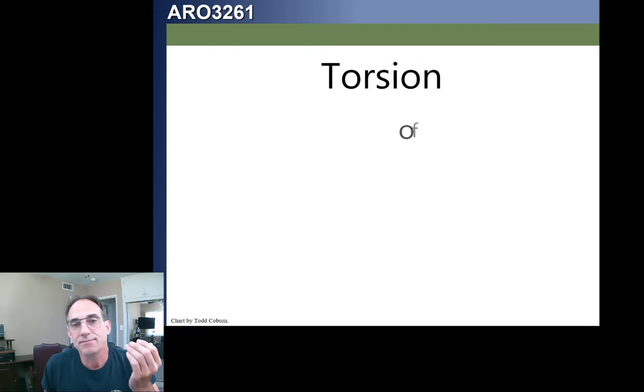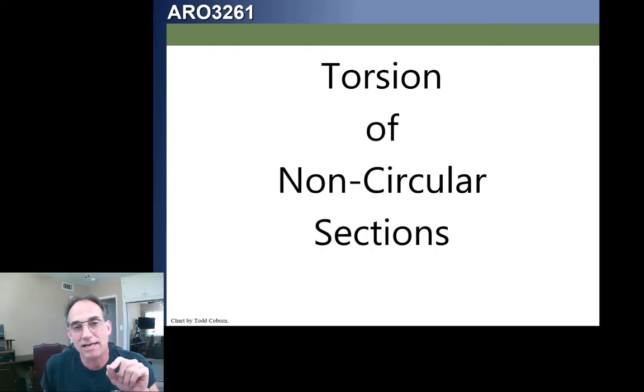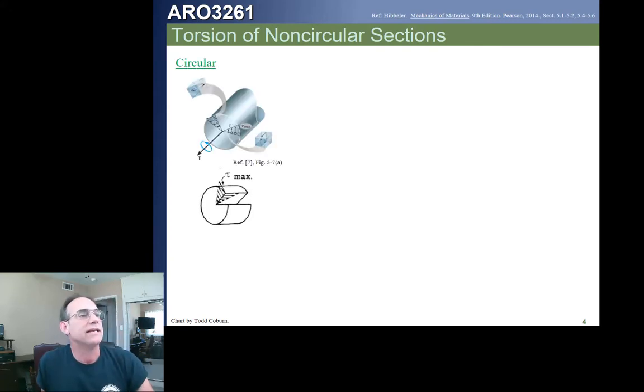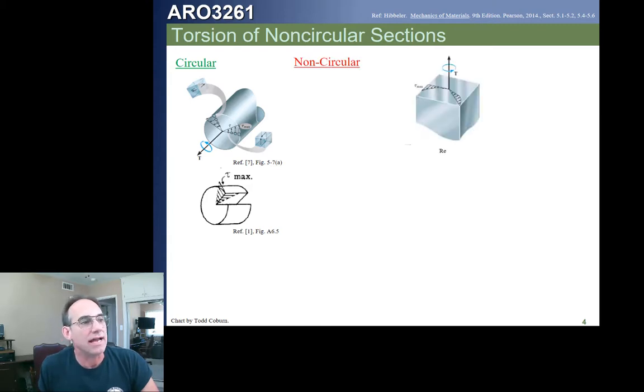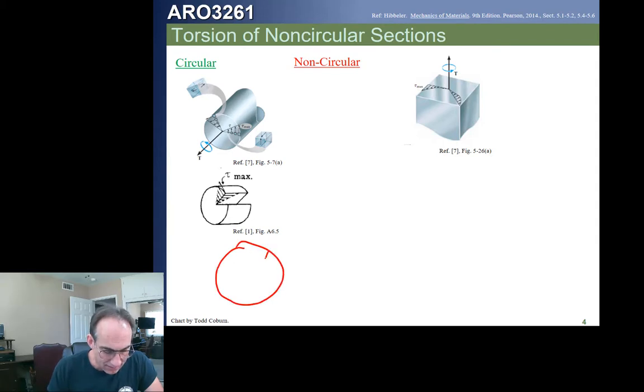If our part is not circular, we're going to follow a similar but different approach. When we have a circular shaft, any little element, we see this torsion can keep going around and around the section. If we look at this little element on the surface, the shear stress is met by another, and it continues through the part going around and around.